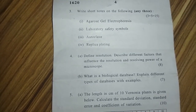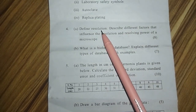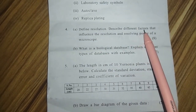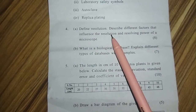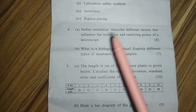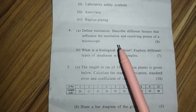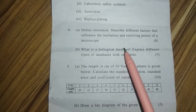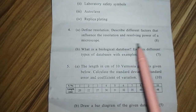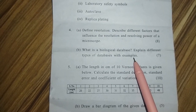Question number four: define resolution and describe the different factors that influence the resolution and resolving power of a microscope. The next part asks: what is a biological database? Explain different types of databases with examples.